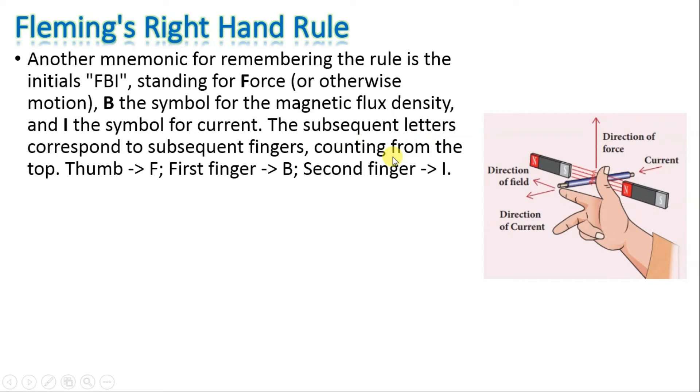The subsequent letters corresponding to the subsequent fingers, counting from the top: thumb, first finger, second finger. FBI: force or motion, magnetic field or field, and current. FBI from top to bottom.